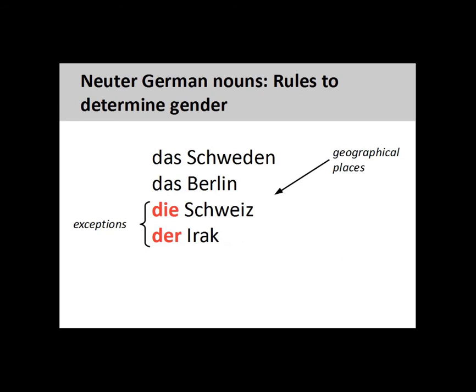Finally, the names of countries, cities, and continents, such as Schweden meaning Sweden and Berlin, are neuter, although you need to be aware that exceptions to this rule also exist, such as Die Schweiz meaning Switzerland, and Der Irak meaning Iraq.